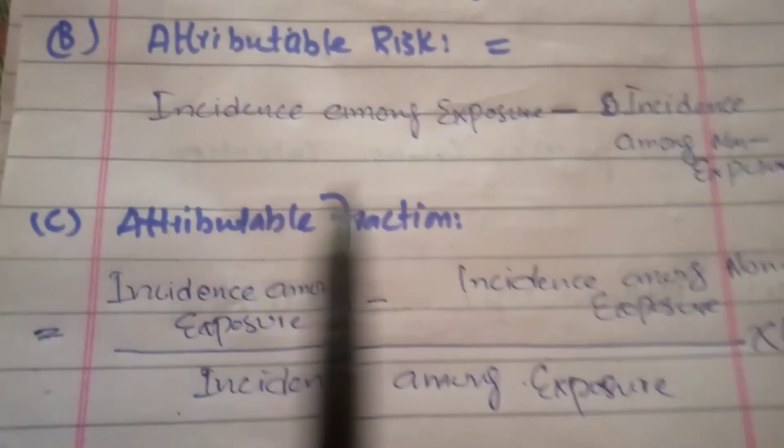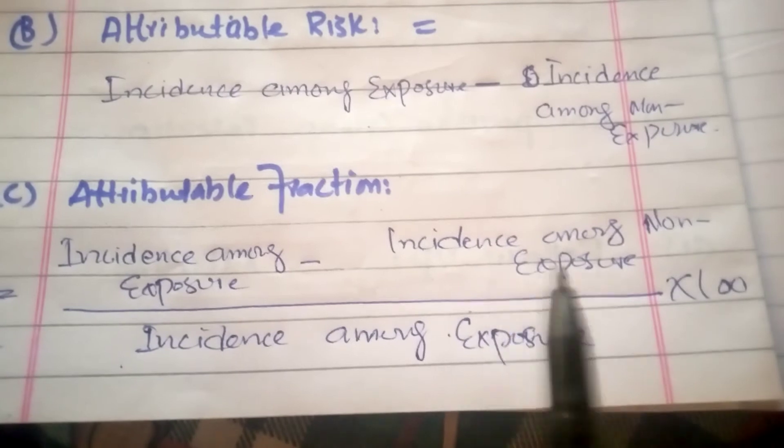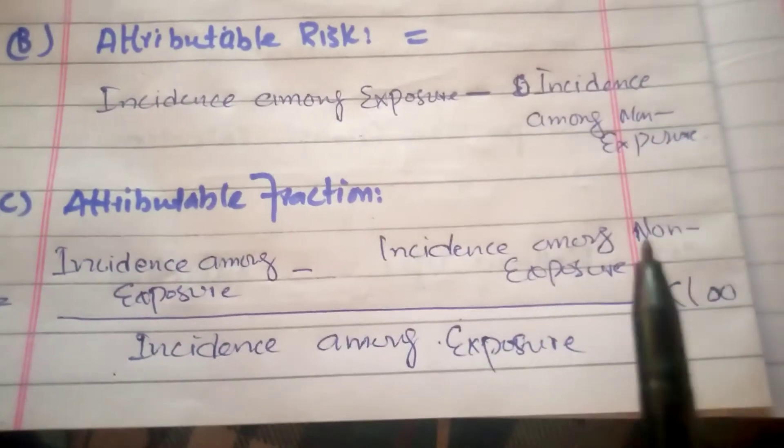Another one is attributable fraction. Attributable fraction: incidence among exposure minus incidence among non-exposure, divided by the incidence among exposure.